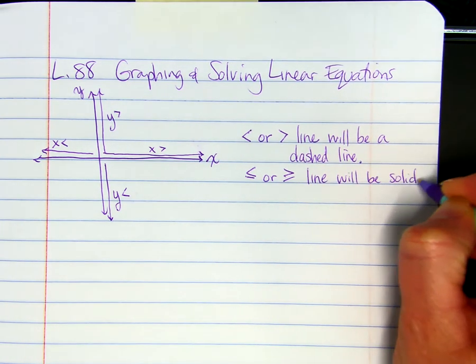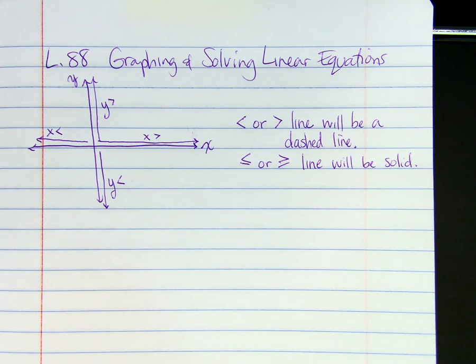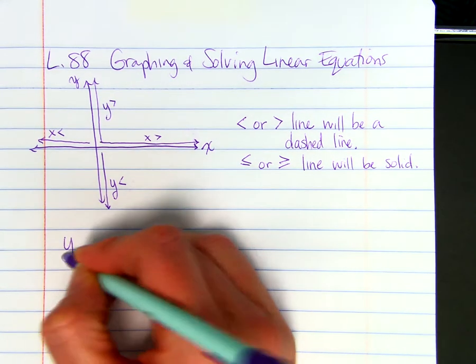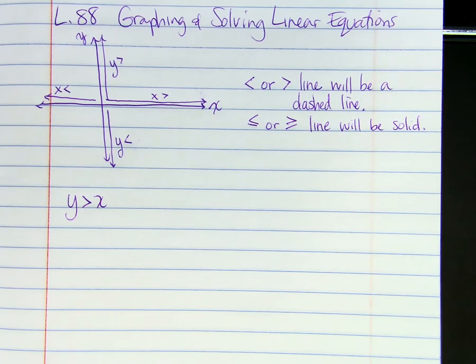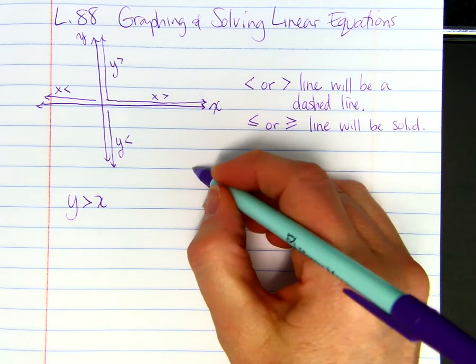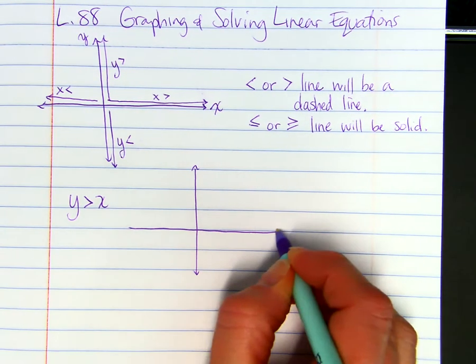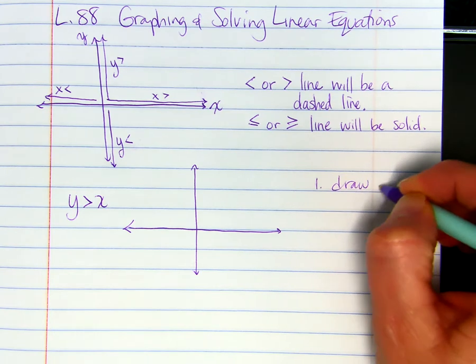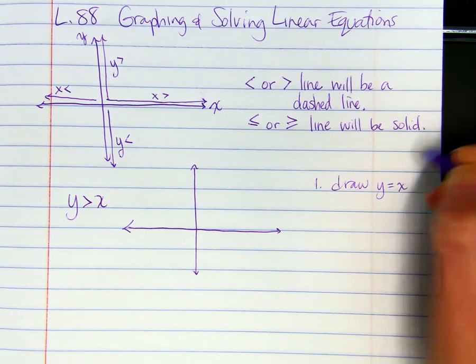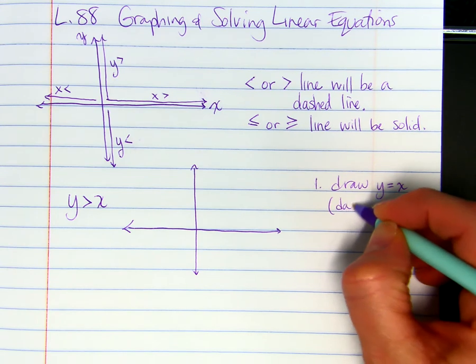So if I have Y is greater than X, and I want to graph that on the coordinate plane. So first of all, you're going to draw the line Y equals X. So I'm just going to put step one, draw Y equals X, and then make sure it's dotted or dashed.